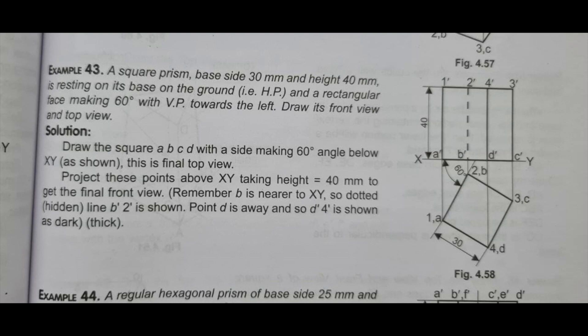Sum number 9: a square prism of base 30mm and height 40mm is resting on its base on the ground — they have said HP — and a rectangular face making 60 degrees with VP, towards the left. Draw front view and top view. In the exam you don't have to draw HP VP — that's only for understanding. There is one square prism and one of the sides is inclined at 60 degrees to VP.